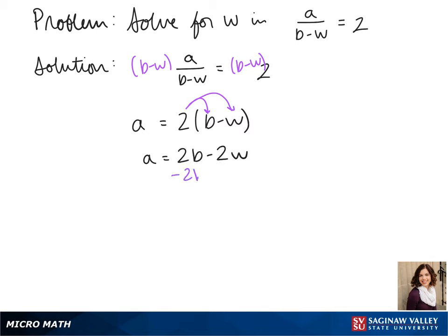Now to get w by itself, we subtract 2b to the other side. We have a minus 2b equals negative 2w. And we divide both sides by negative 2.